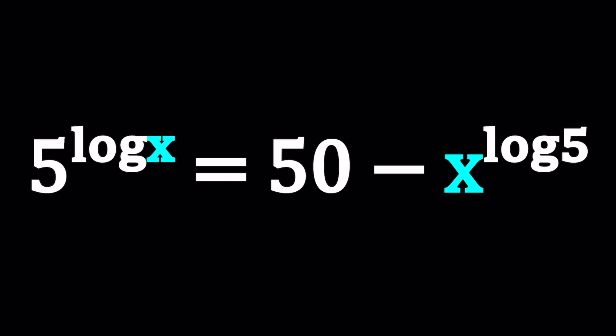We have 5 to the power log x equals 50 minus x to the power log 5. This problem looks insurmountable, doesn't it? Now, we have a non-standard equation because 5 to the power log x looks exponential and logarithmic, maybe a mixture. And x to the power log 5 looks more like a polynomial, even though log 5 is not an integer. Or I should say, non-negative integer, maybe. Maybe a power function, right?